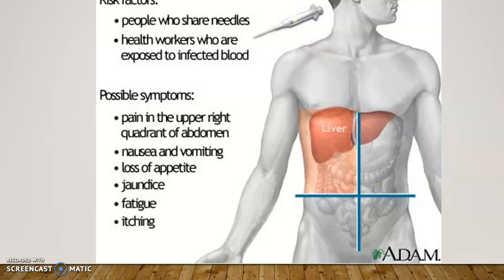The liver is in the upper right quadrant, so pain in the upper right quadrant could be something going on with the liver — for example, hepatitis. 'Hepatic' means liver, 'itis' means inflammation, so hepatitis is inflammation of the liver. If someone has hepatitis, they'll present with pain in the upper right quadrant.